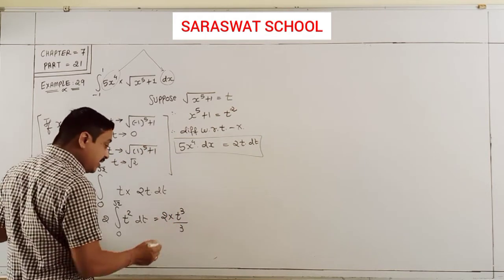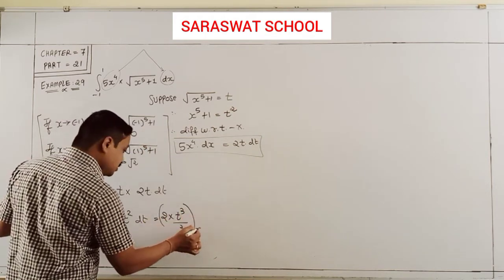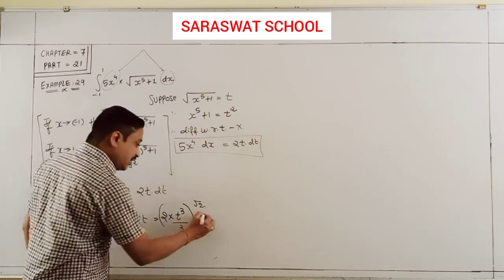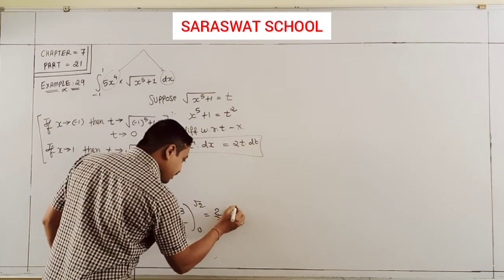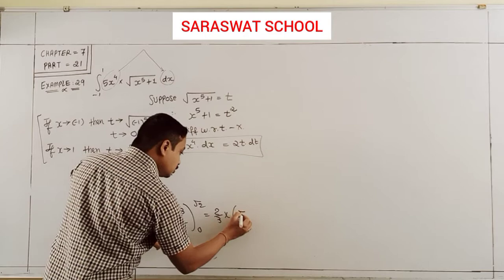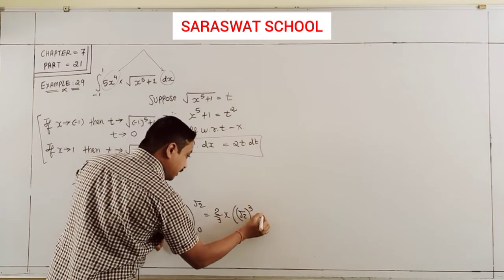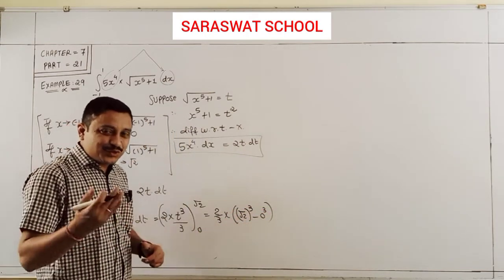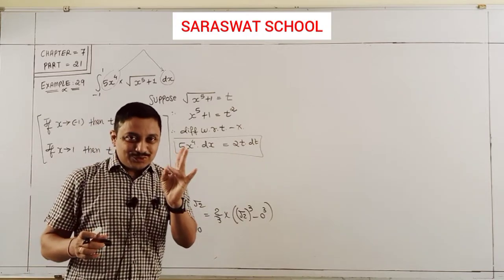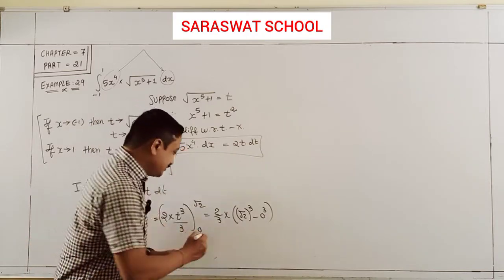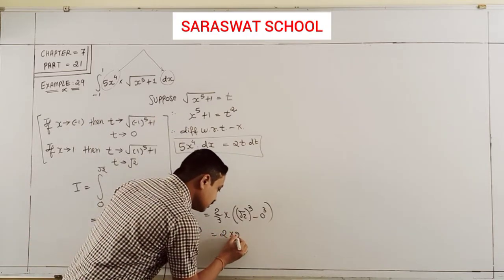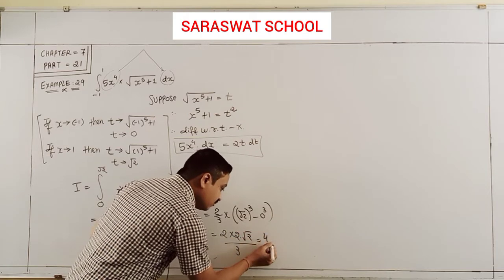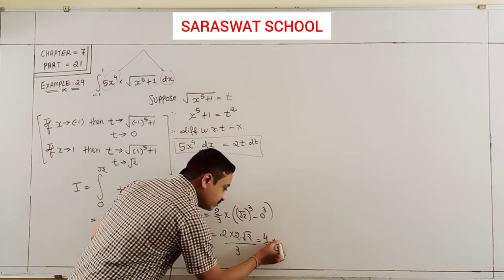With limit 0 to √2, taking the constant outside and applying the limits: (√2)³ minus 0³. Now (√2)³ equals √2 × √2 × √2 = 2√2. So my answer is (2/3) × 2√2, which gives 4√2/3.